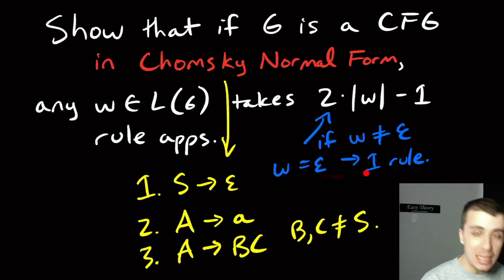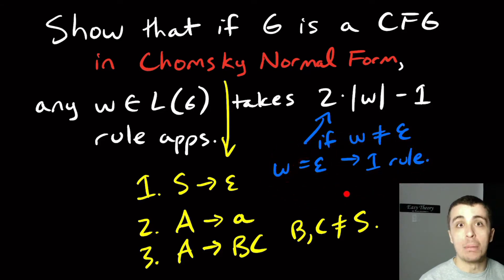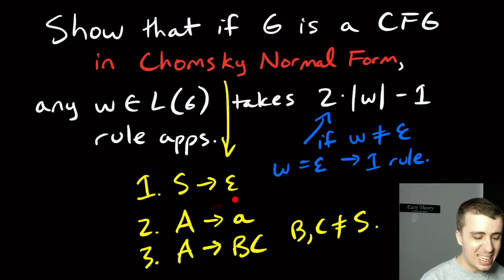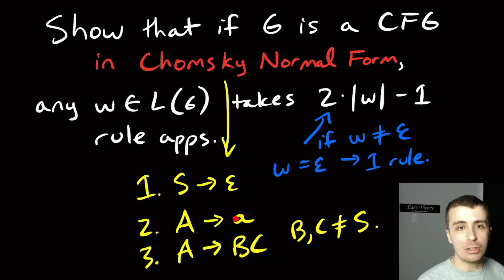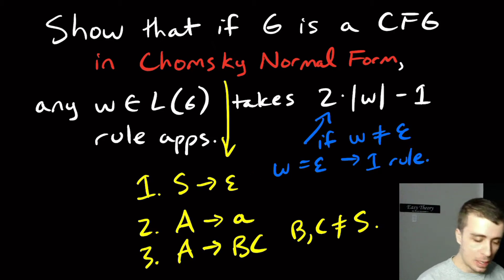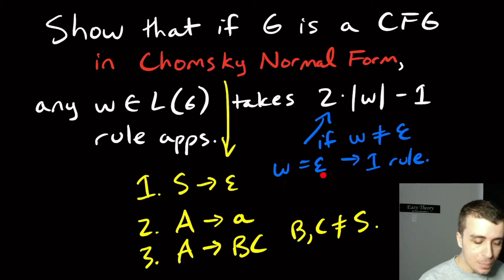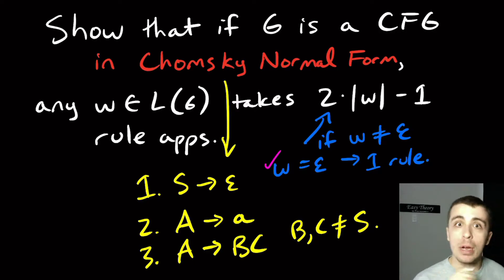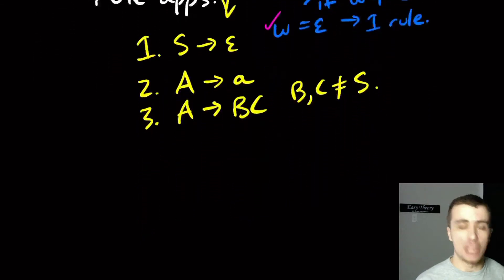We can prove the empty string exception pretty easily. If it's in Chomsky normal form, the only rule that can generate the empty string is the start variable producing epsilon. We can't use the other variables because they're not the start variable, so we can't come back up and generate the empty string that way. The only way to generate the empty string takes exactly one rule application starting from the start variable. So that case is handled. Now let's suppose that the string is not empty.